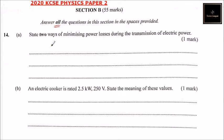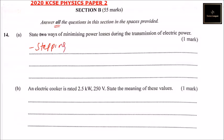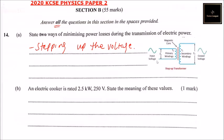One way is stepping up the voltage. We use a transformer to do that. For example, from the power station, the input voltage is stepped up to give a higher output voltage.